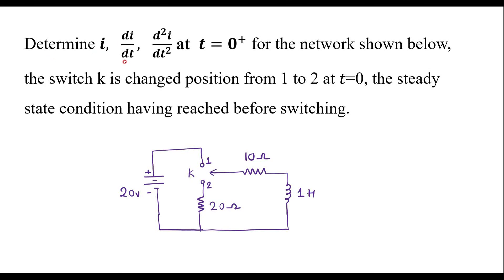Determine i, di/dt, and d²i/dt² at t equal to 0 plus for the network shown below. The switch k is changed from position 1 to 2 at t equal to 0, with the steady state condition having been reached before switching.